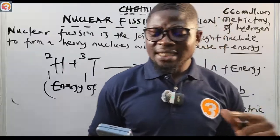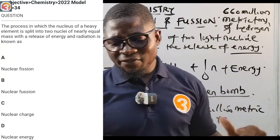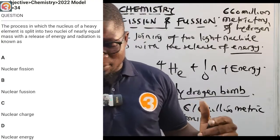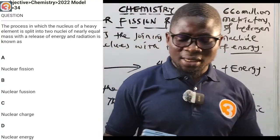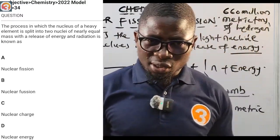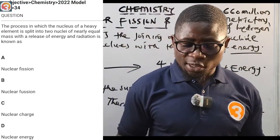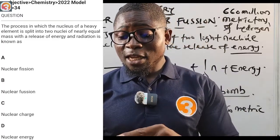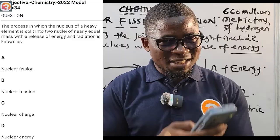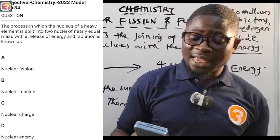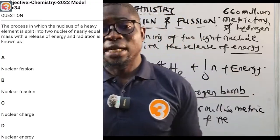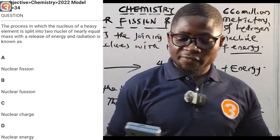2022 question 34 says: the process in which the nucleus of a heavy element is split into two nuclei of nearly equal mass with a release of energy and radiation is known as — options: A — fission, B — fusion, C — nuclear charge, D — nuclear energy. A heavy nucleus is being split, so the correct answer is nuclear fission.